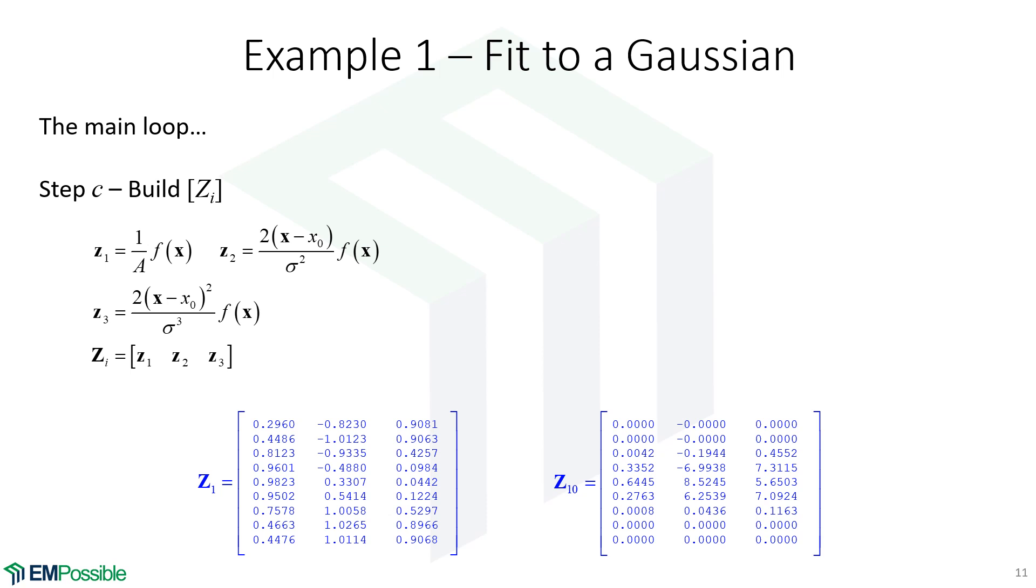Now, we build the big Z matrix, and I like to calculate three column vectors. Here's the first column, second column, third column, and then stick them into the Z matrix. So, here's the Z matrix on the first iteration with that first guess at our curve fit. And here's the Z matrix after about 10 iterations, just to give you an idea of the numbers.